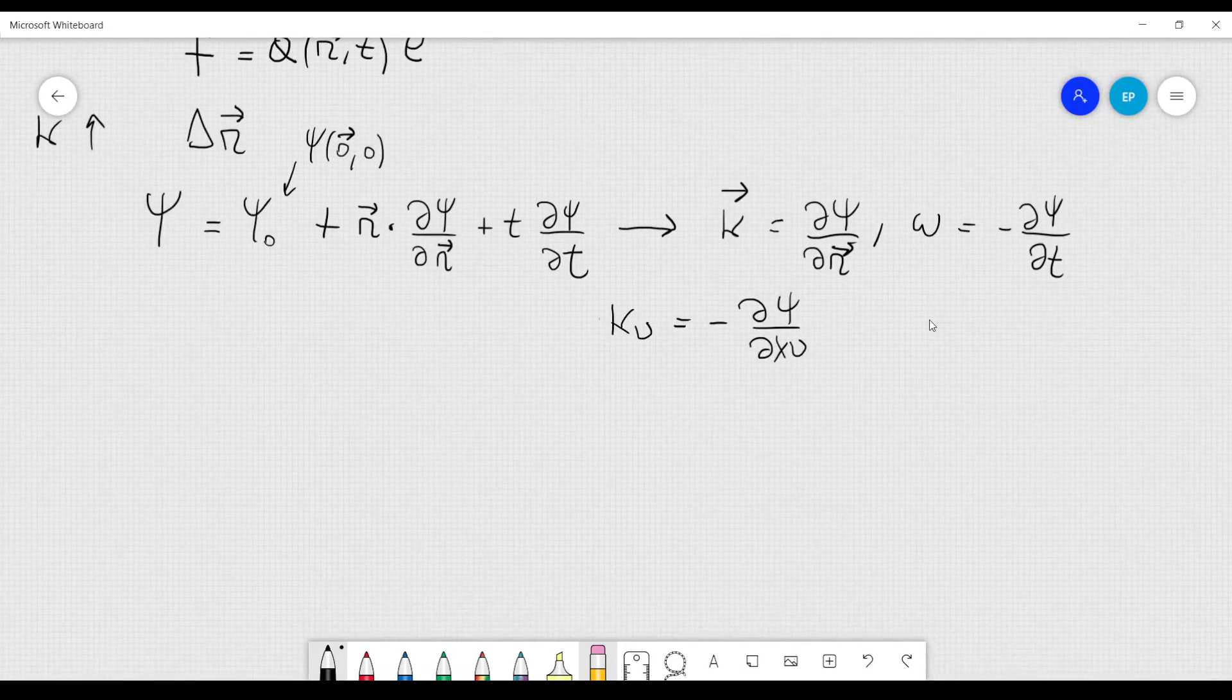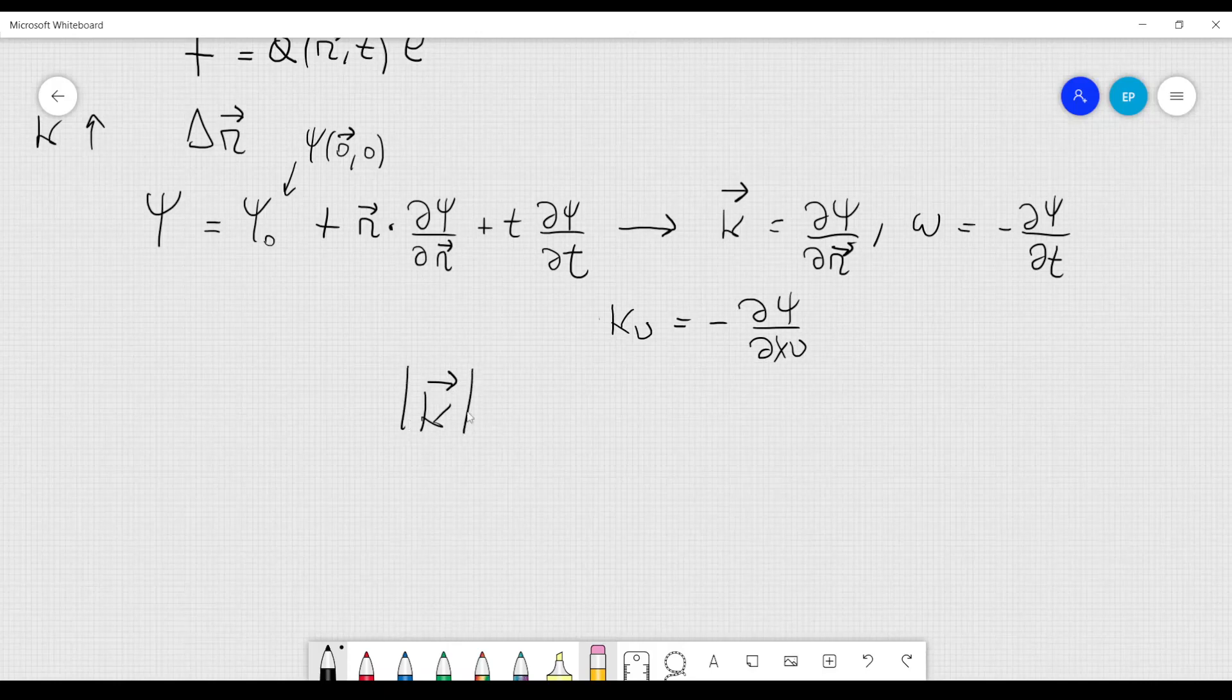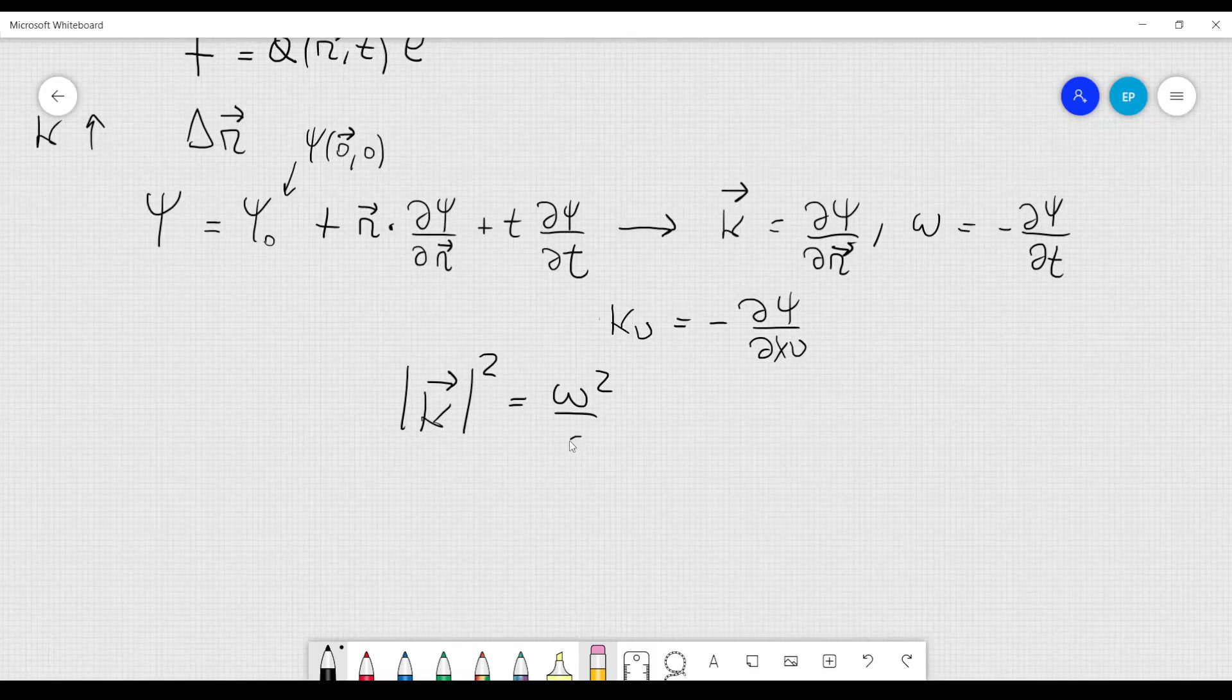From electromagnetism, we know that the vector k, in particular its magnitude squared, is equal to omega squared over c squared, this is clear from the wave equation, and this equation can also be written like this,